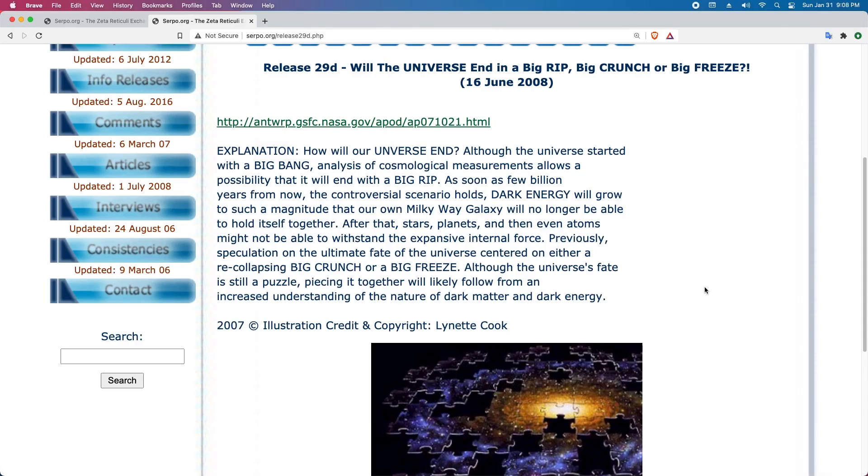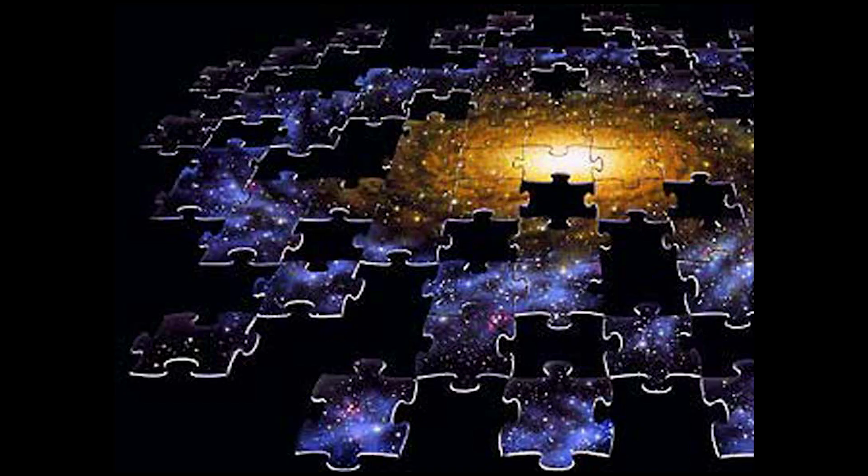Release 29D: Will the universe end in a big rip, big crunch or big freeze? How will our universe end? Although the universe started with a Big Bang, analysis of cosmological measurements allows a possibility that it will end with a big rip. As soon as a few billion years from now, the controversial scenario holds, dark energy will grow to such a magnitude that our own Milky Way galaxy will no longer be able to hold itself. After that, stars, planets, and then even atoms might not be able to withstand the expansive internal forces. Previously, speculations on the ultimate fate of the universe centered on either a re-collapsing big crunch or a big freeze. Although the universe's fate is still a puzzle, piecing it together will likely follow from an increased understanding of the nature of dark matter and dark energy.